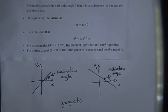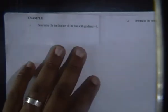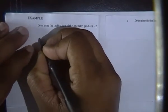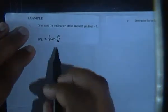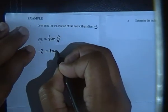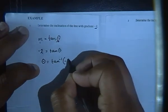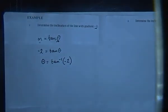Let's go through some examples. Example 1: determine the inclination of the line with gradient negative 2. You don't really need to draw the line. Our formula is: the gradient m equals tan(theta). We know m = -2, so we say -2 = tan(theta), which means theta = tan⁻¹(-2). Now take out your calculator.